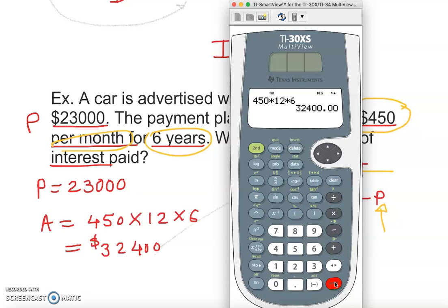Now we can just plug it in. Interest is equal to total amount, which is $32,400, minus $23,000.